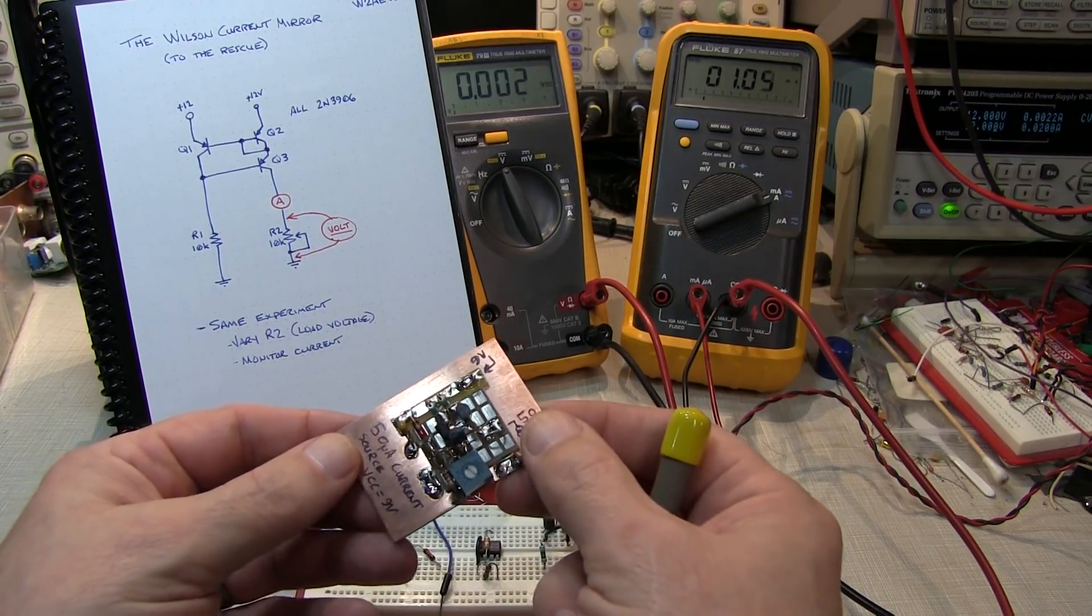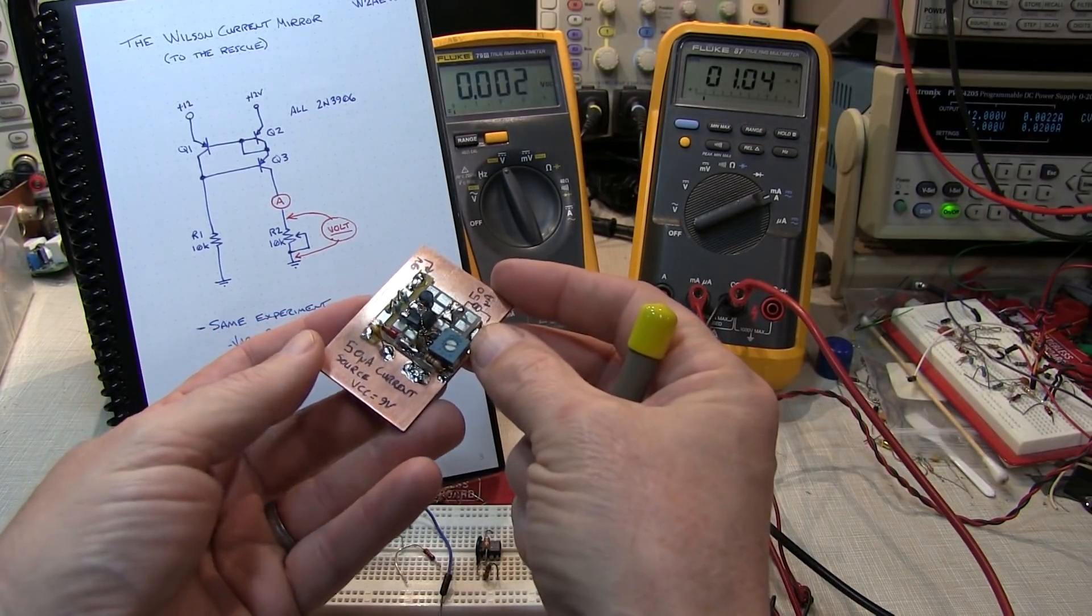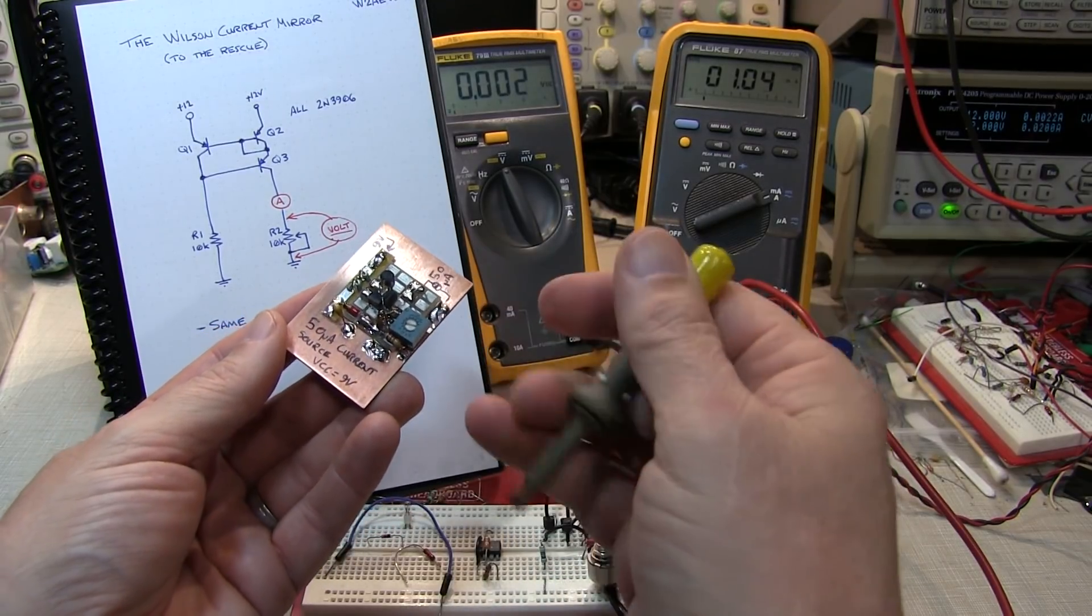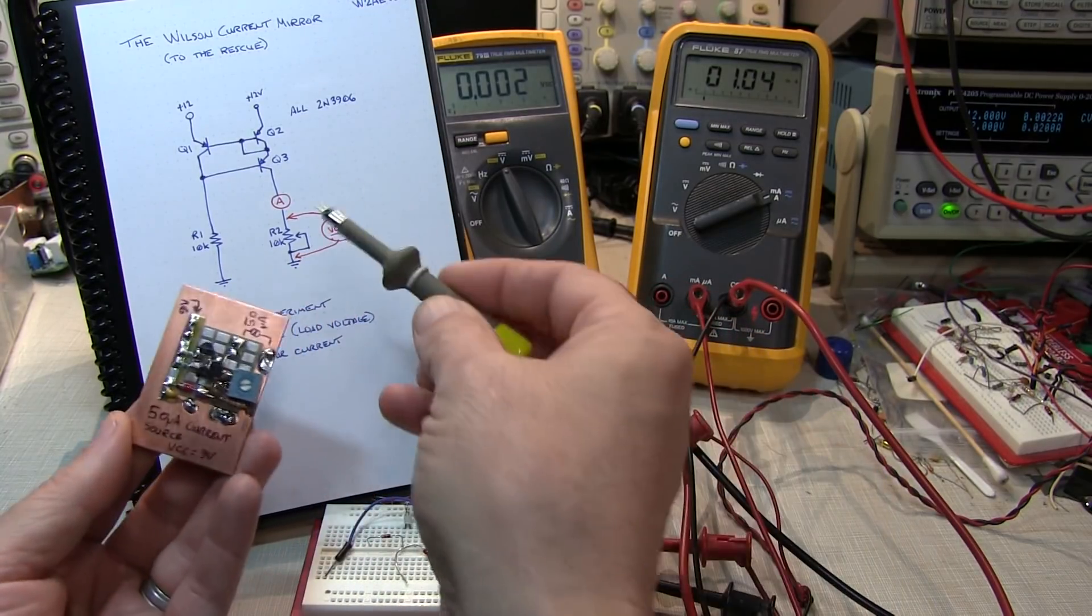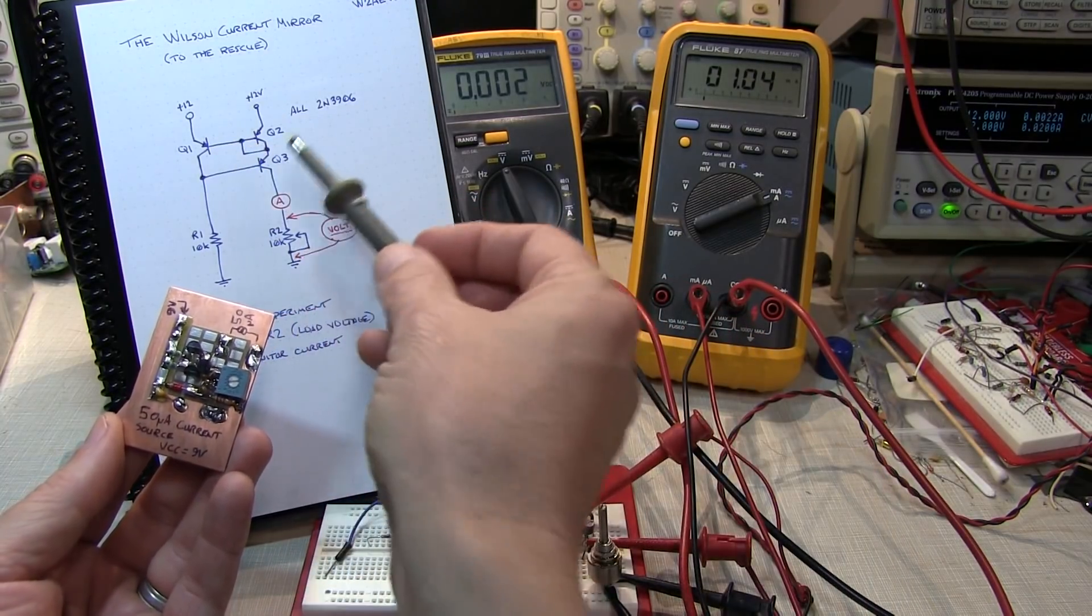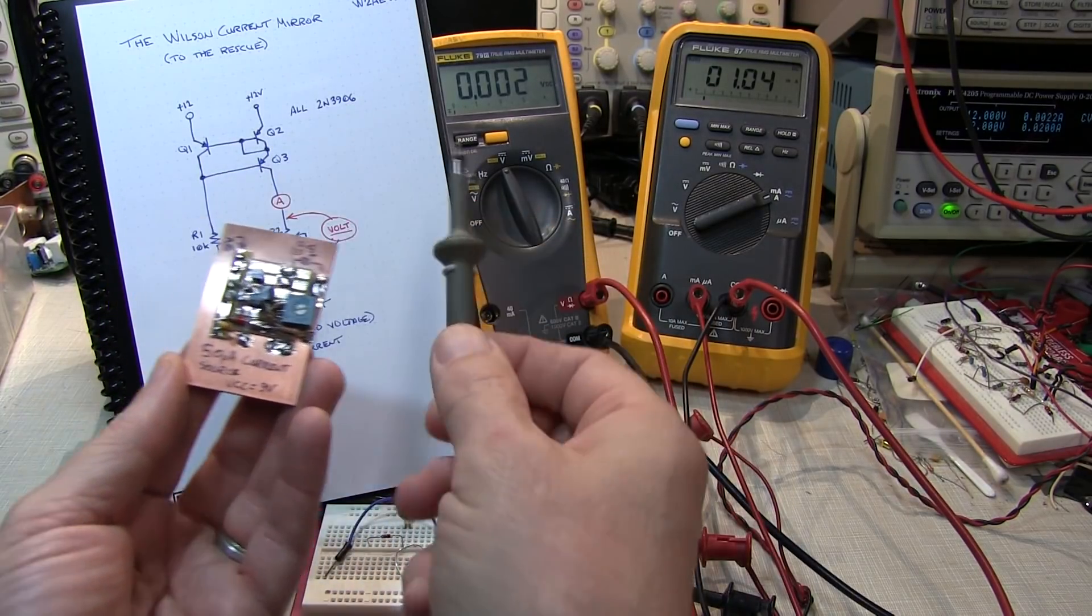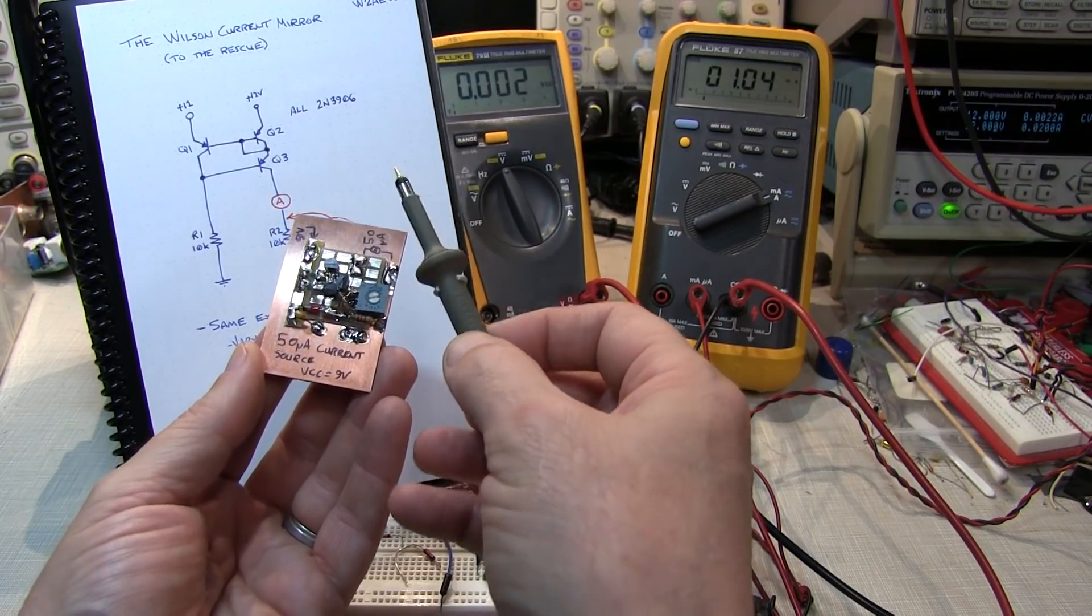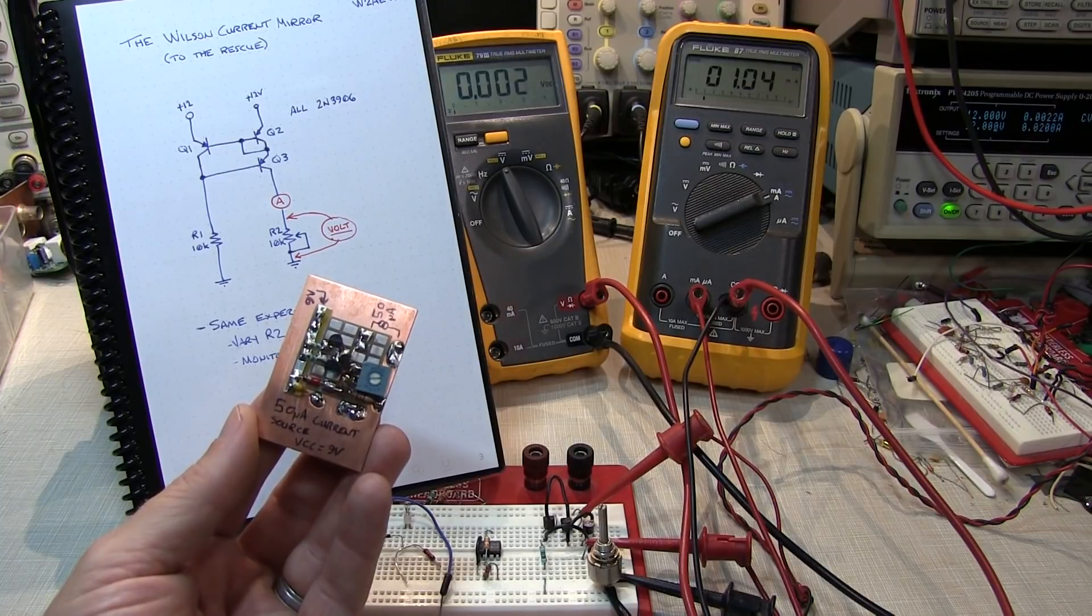So I hope you learned a little something about the early effect in bipolar transistors and the early voltage that's used to characterize it and how that affects the output impedance of something like a current mirror and then how simple tricks like this Wilson current mirror can be used to effectively deal with that finite output impedance of the transistors and give us a very high output impedance near ideal current source from a couple of transistors.